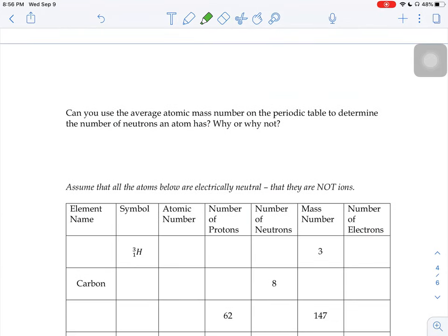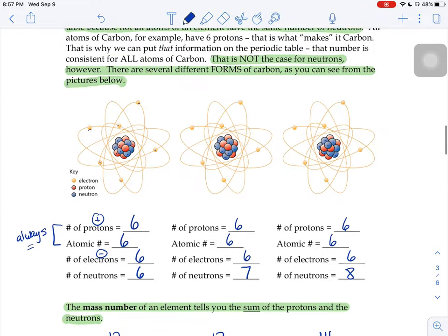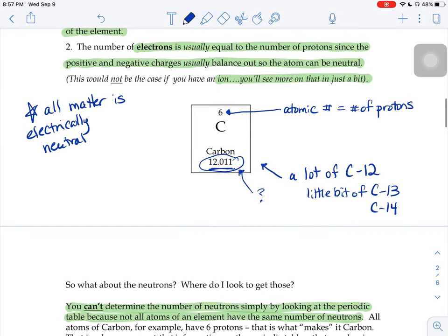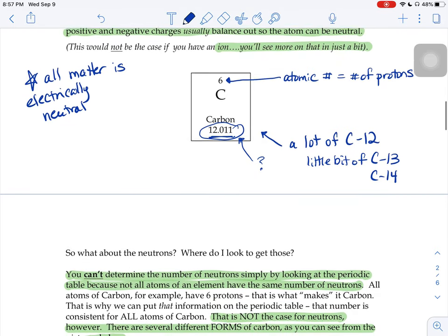So, can you use that average atomic mass number on the periodic table to determine the number of neutrons an atom has? Why or why not? No, you can't. There's no atom that exists with that mass. On the entire planet, even in outer space, there is not a single atom of carbon anywhere in the world that has a mass of 12.011. It doesn't exist. That number is just an average of all the isotopes of carbon.